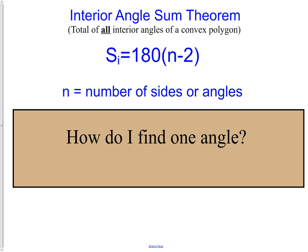Next, let's talk about the Interior Angle Sum Theorem, which gives us the total of all interior angles of a convex polygon. The formula is: S (sum of the interior) equals 180 degrees times the quantity N minus 2, where N is the number of sides. So for a 12-sided figure, we would take 180 times (12 minus 2), or 180 times 10, to get the total of all interior angles.